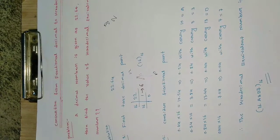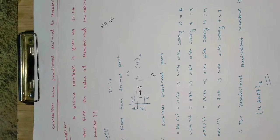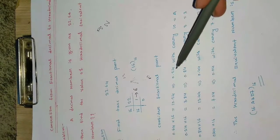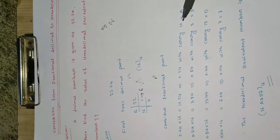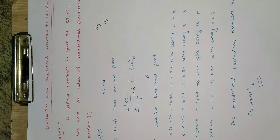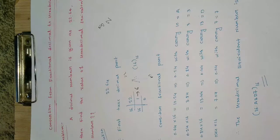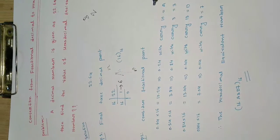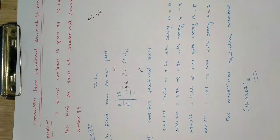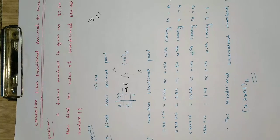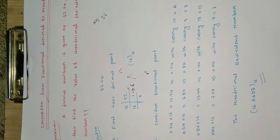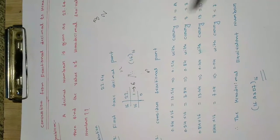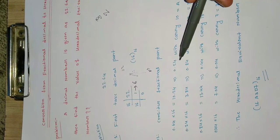We are left with 0.24, which is carried forward. The integer part is 10, and 10 in hexadecimal is written as A. In hexadecimal, digits up to 9 are written as-is, but from 10 onwards we use letters A, B, C, D, E, F for values 10 through 15. So I have written A here.